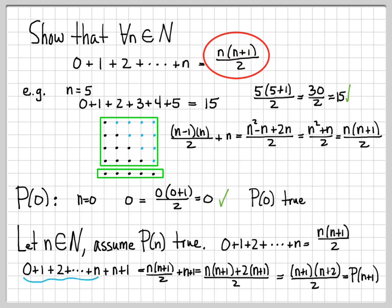It's like I've gone to my starting statement, n times n plus 1 over 2, and replaced each n with n plus 1. This n has been replaced with an n plus 1. And this n has been replaced by an n plus 1 to give me n plus 1 plus 1, which is n plus 2.